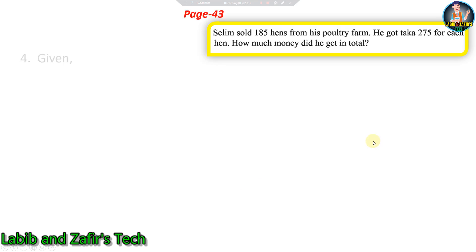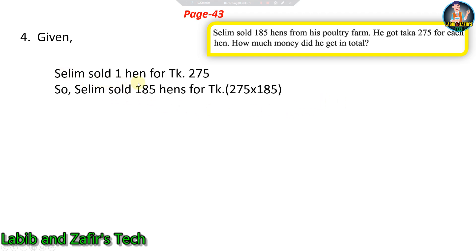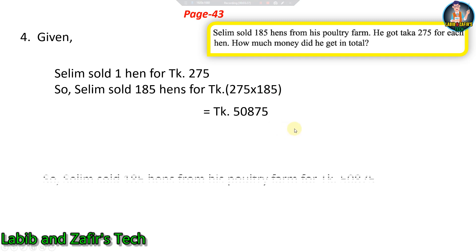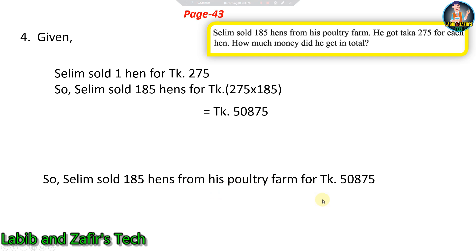Our fourth question: Selim sold 185 hens from his poultry farm, he got taka 275 for each hen, how much money did he get in total? For one hen he got 275 taka, there are 185 hens, so we multiply 185 by 275. Selim sold 185 hens for taka 275 into 185, that is taka 50,875.